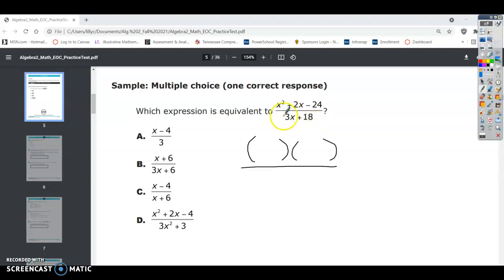The bottom has a greatest common factor of 3 and that's the only thing that can be pulled out at the bottom. So let's go ahead and factor that into 3 times x plus 6. 3 times x is 3x and 3 times 6 is 18.